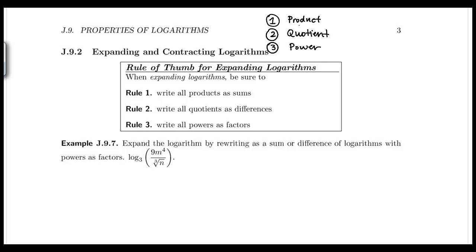Product rule says if you have a log of a product, it's the sum of the logs. Quotient rule says if you have a log of a quotient, it's the difference of the logs. And power rule says if you have a log of a value to an exponent, you can throw the exponent in front of the log and make it into a product. These are like the golden rules of logs.